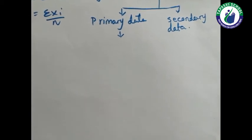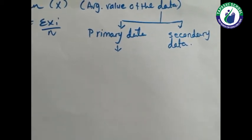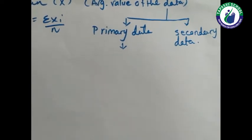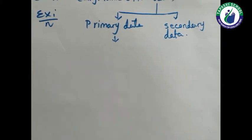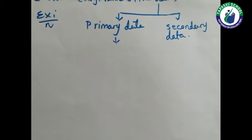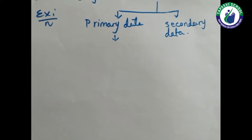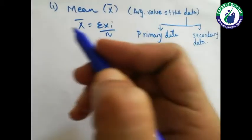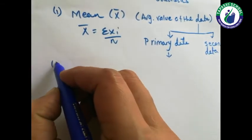Secondary data means data for which I am getting ready-made material, or I am getting the data from any source like Google, a newspaper, or a magazine. So I am directly getting the data from an outside source. That type of data is known as secondary data.